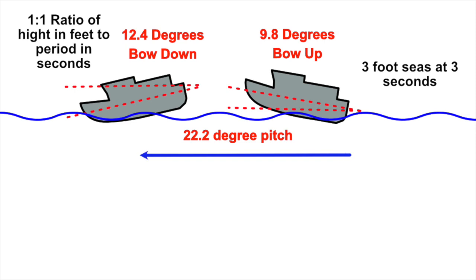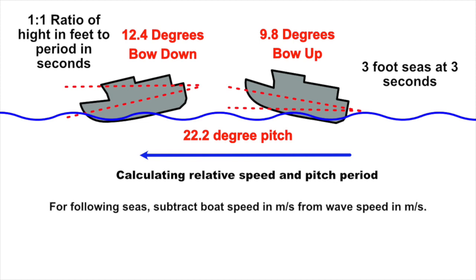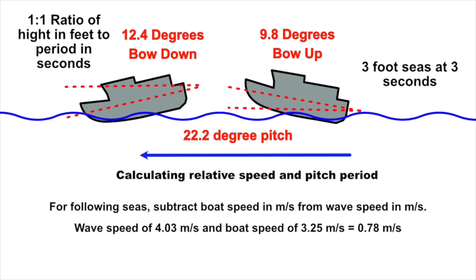Let's reverse our direction now and have following seas. For following seas we subtract boat speed in meters per second from wave speed in meters per second. You'll see this makes a huge difference because our wave speed of 4.03 meters per second and our boat speed of 3.25 meters per second are so close. We end up with a relatively small number at 0.78 meters per second. When we divide that wavelength of 10.39 meters by our relative speed of 0.78 meters per second we get 13.32 seconds between wave crests pitch period. I don't necessarily want to pitch at 22.2 degrees but having it at 13.32 seconds is a whole lot better than less than 2 seconds.